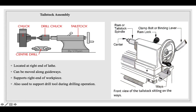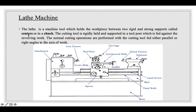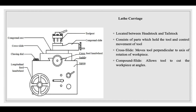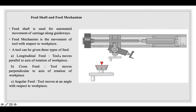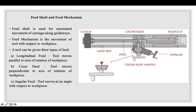For drilling, a drill tool is attached to the tailstock and a hole is drilled in the workpiece, which is held on a chuck. The lathe carriage works between the headstock and tailstock and consists of parts that hold and control the movement of the tool. The cross slide moves the tool perpendicular to the axis of rotation of the workpiece, and the compound slide allows cutting at angles. The feed shaft is used for automated movement of the carriage along the guideways.